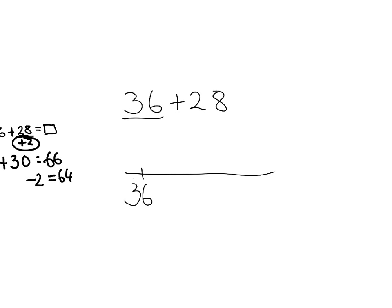Once again, we're going to add 2 to 28 to make it equal 30, so we jump by a tidy number. 36 plus 30 equals 66.